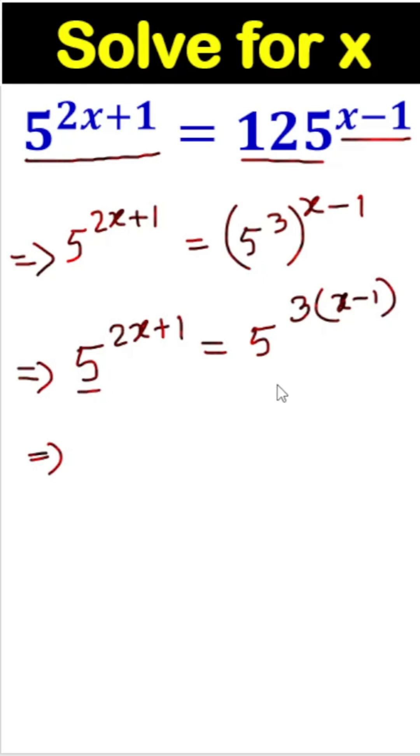Here is 5 and here is 5. We know once bases are the same, the powers will be equal. It means 2x plus 1 equals 3x minus 3.